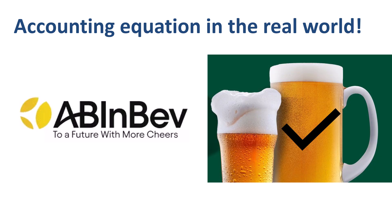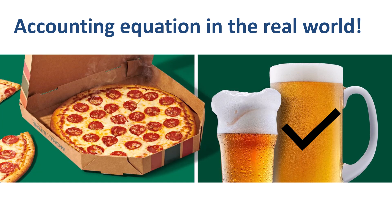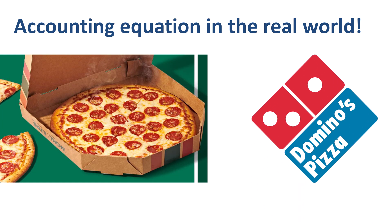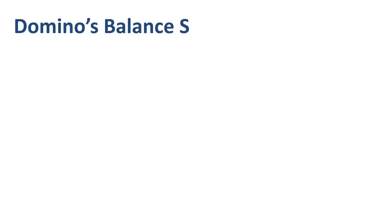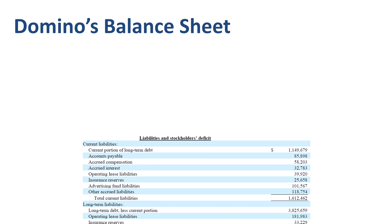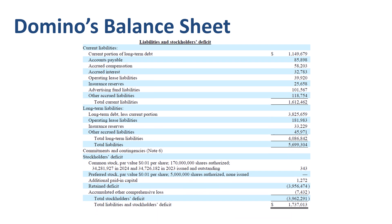Beer done! Time for pizza — more specifically, Domino's Pizza as the second example. To fill in the accounting equation, we need to collect data from the balance sheet. Assets: $1.7 billion. Liabilities: $5.7 billion. Equity: negative $4 billion.